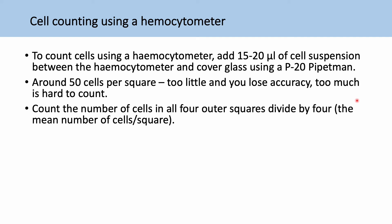So what you do is you count the number of cells in all the four corners. And then you divide by four to get the average or mean number of cells per corner per square. Then you take that number and multiply it by 10 to the power of 4 to give you what you have in your total cell solution.